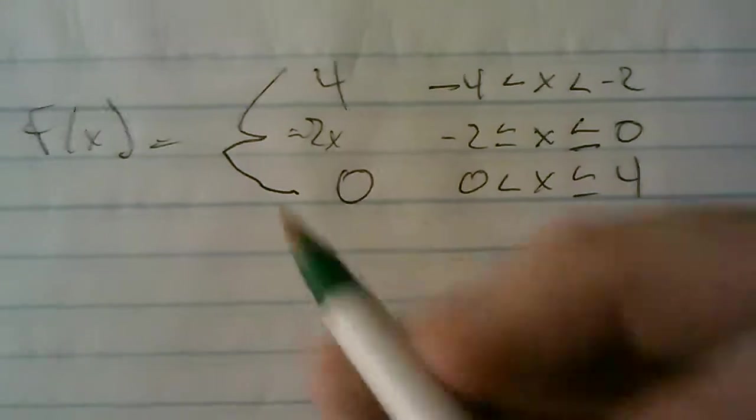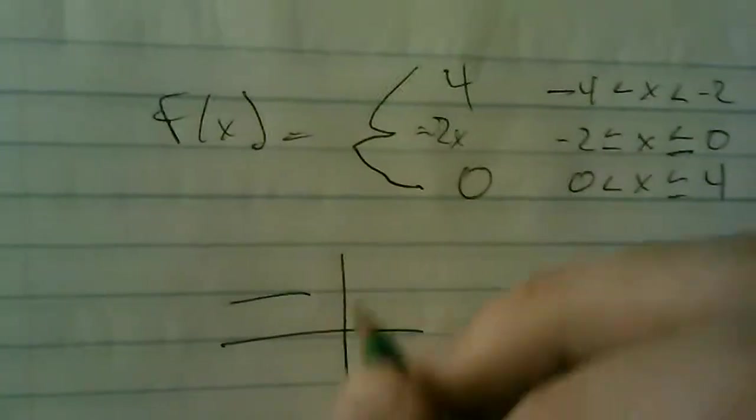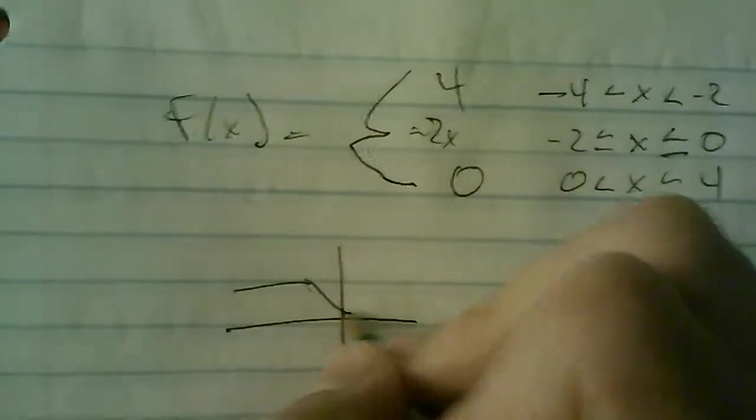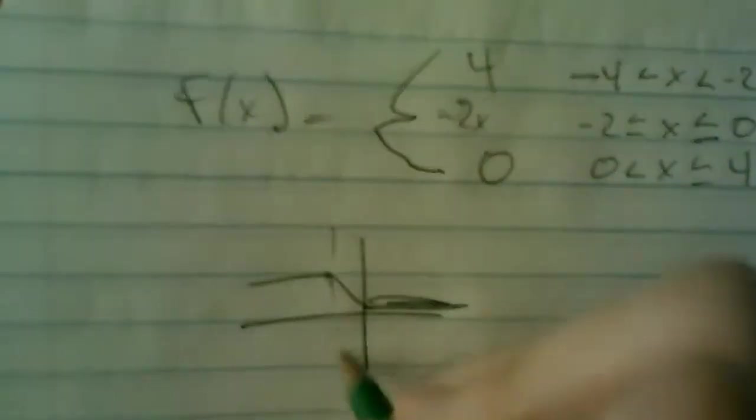Or it could be at zero because that's where the function shifts as well. So the graph would look something like, it would be a line and then negative two x would go like down and then be like a line. But we don't know if there's a jump somewhere or a hole or an asymptote or something.